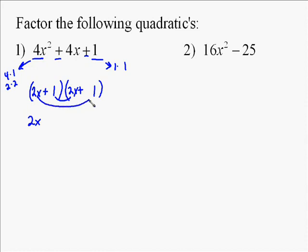You get 2x times 2x, or 2x times 2x gives you 4x squared. So then we test it to see what's right. Well, 2x times 1 is 2x, 1 times 2x is 2x, or 2x plus 2x equals 4x. So our factorization is 2x plus 1 times 2x plus 1.